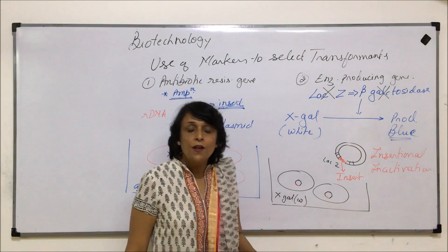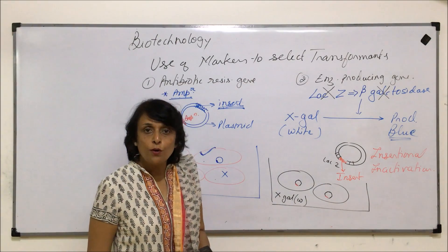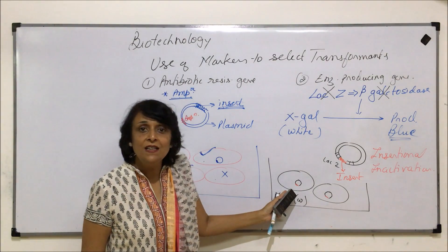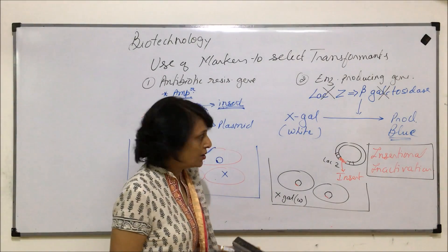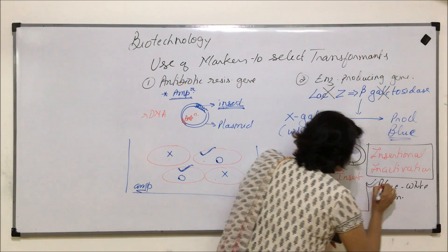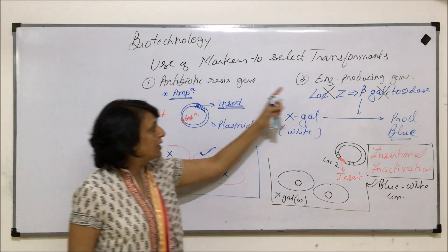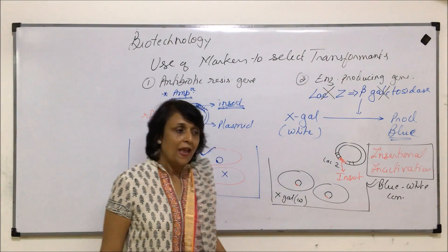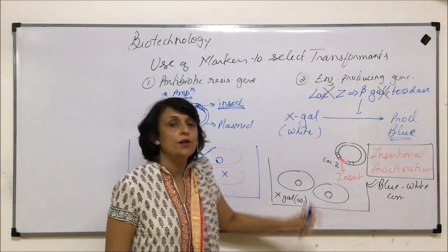That means these are the cells in which the desired gene or insert has gone in — in other words, these are our transformants. So by using an enzyme-synthesizing gene, we have also identified our transformants. This important term is insertional inactivation, which can also be termed as blue-white conversion because of this color change. Using these two types of markers — the antibiotic resistance gene and the enzyme-producing gene — we are able to select our transformants and use them to obtain the particular protein that the desired gene or insert is going to synthesize.